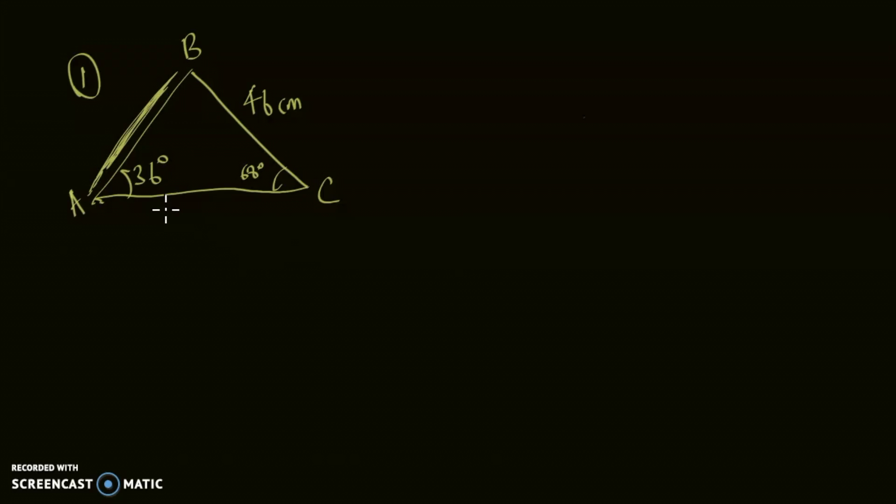Okay, now let's have a look at our first example over here. The first thing we need to do, the first step, is to find the type of triangle.